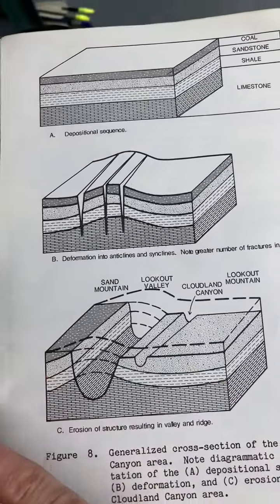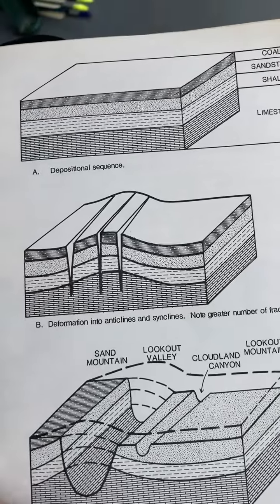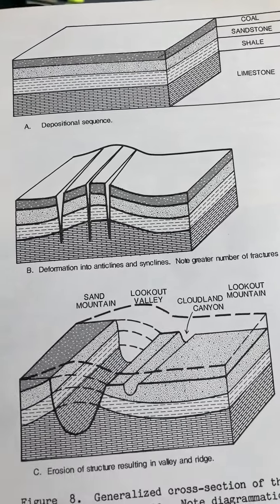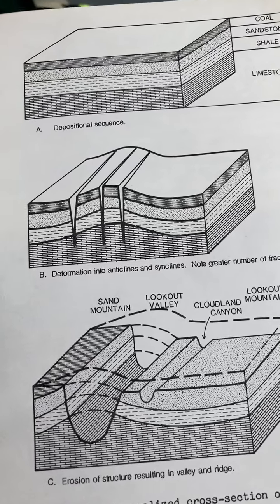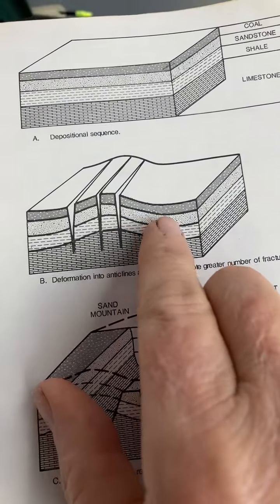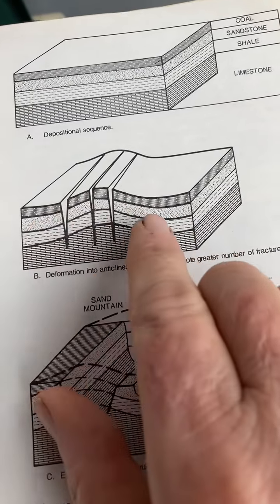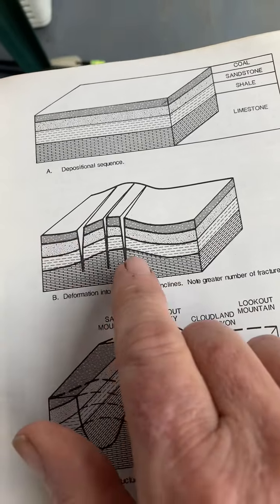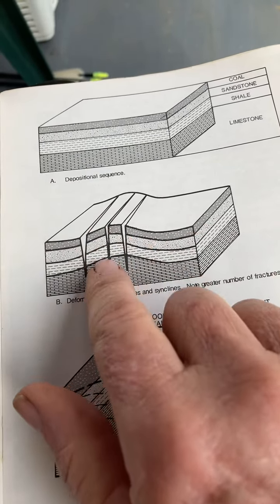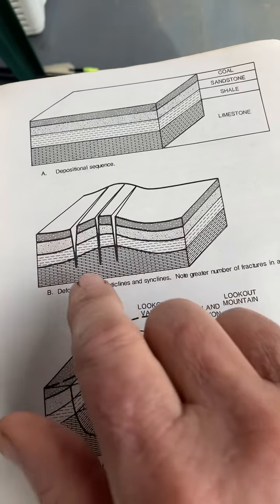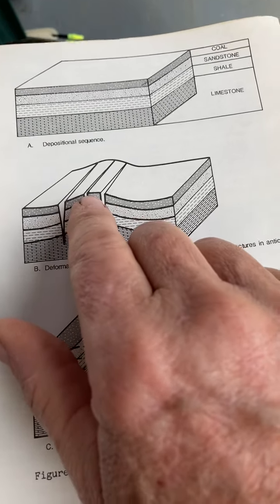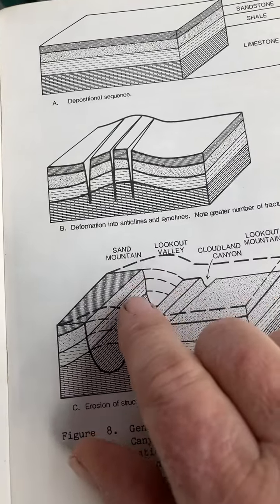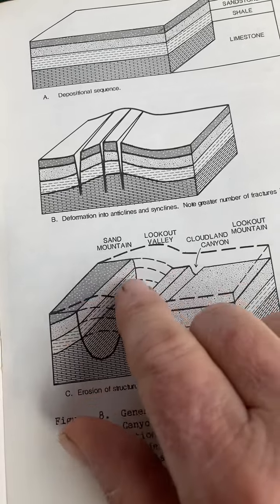This shows you how anticlines turn into valleys. An anticline is where the sediments bulge up. And a syncline is where the sediments bulge down. You can look at this as the Valley and Ridge Province and the Cumberland Plateau. The Valley and Ridge Province bulged up into these anticlines, and see how it causes these cracks. The cracks cause so much erosion that it turns the anticline area — the Valley and Ridge Province — into a valley.